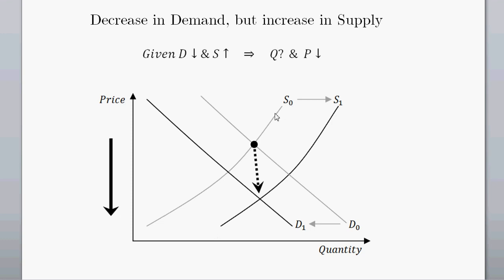This is S sub nought — the initial supply curve — and D sub nought — the initial demand curve. Demand has gone down to D sub 1 and supply has increased to S sub 1. We started at the initial equilibrium with S sub nought and D sub nought, and we're now at the new equilibrium. Price has definitely gone down. However, where quantity ends up depends entirely on how big the shift out in the supply curve was and how big the shift in in the demand curve was.